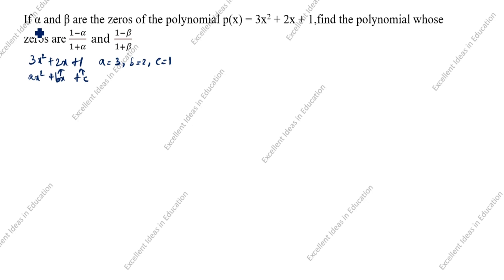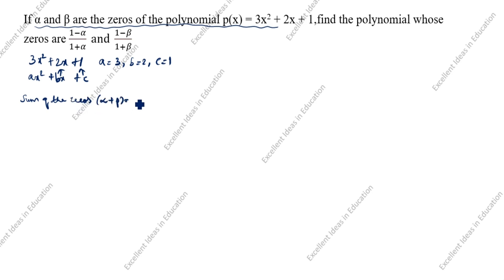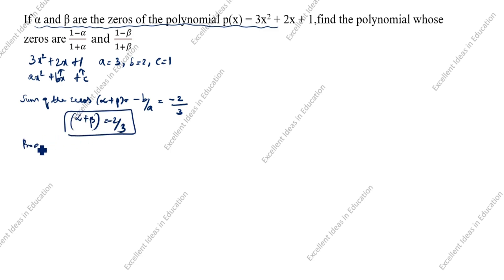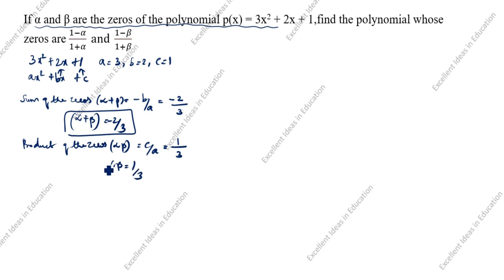Alpha and beta are the zeros of the polynomial p(x) = 3x² + 2x + 1. The sum of the zeros: alpha + beta = -b/a = -2/3. The product of the zeros: alpha × beta = c/a = 1/3.